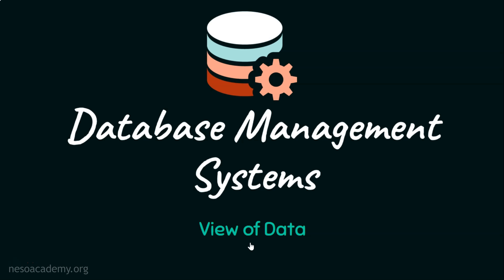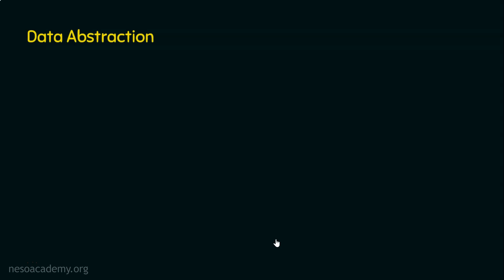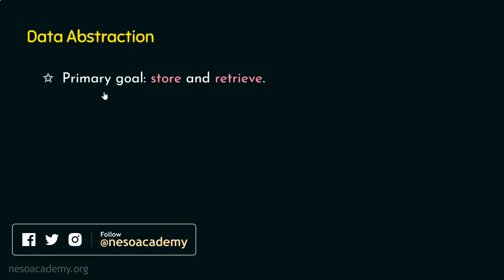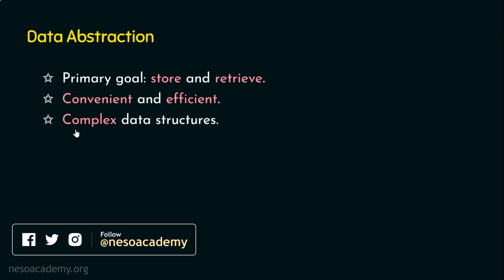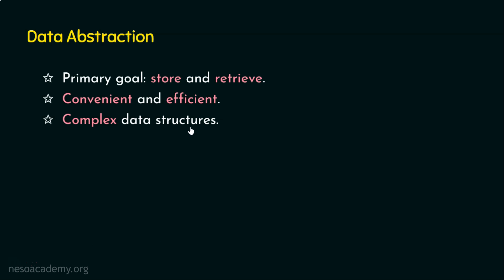In the last presentation we have seen about the three-tier architecture. In this presentation we will focus on the view of data. In the last presentation I told you we have multiple views at the presentation level. Why do we need multiple views of data? The answer will be revealed in this presentation. Before we step into various views of data, we need to understand what is data abstraction.